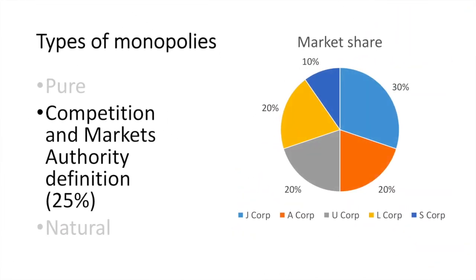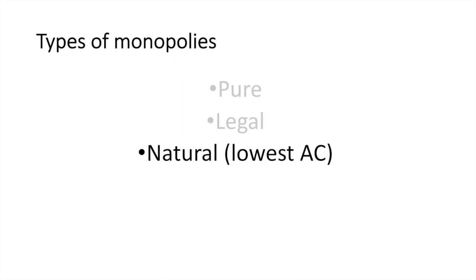A firm may be considered a monopoly by the UK government if it controls more than 25% of a market. This percentage may vary by country, but the value determined by the UK Competition and Markets Authority will be the basis of our discussion. A third type of monopoly we'll explore in the future is a natural monopoly, which exists when significant economies of scale exist by having only one firm in the industry. For now we'll focus on the first two types mentioned but we'll return to the natural monopoly in the next video.